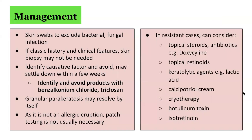In managing patients who present with granular parakeratosis, skin swabs should be performed to exclude bacterial and fungal infections. If the history and clinical features are classic for granular parakeratosis, a skin biopsy may not be needed. It is important to identify potential causative factors and avoid them if possible, which may allow the rash to settle within weeks. Products containing benzalkonium chloride or triclosan should be identified and avoided. Granular parakeratosis may also resolve spontaneously. Since it is not an allergic eruption, patch testing is not usually necessary. In resistant cases, treatment options include topical steroids, antibiotics, topical retinoids, keratolytic agents such as lactic acid, calcipotriol cream, cryotherapy, botulinum toxin, and isotretinoin.